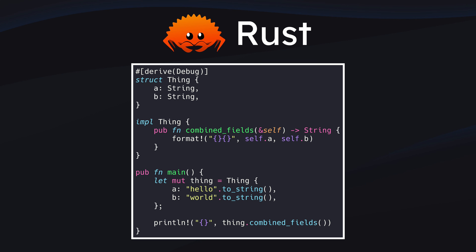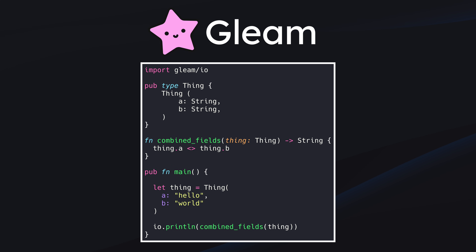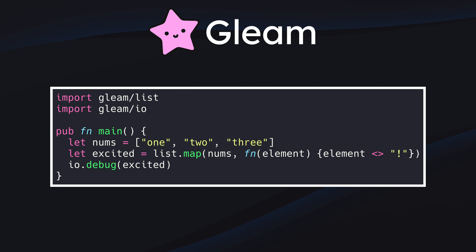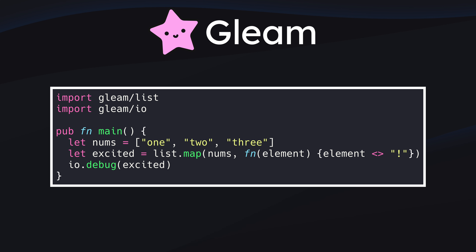Onto methods: Gleam doesn't have support for methods either. What that means is that you can't associate a function with a record such that it has direct access to the record's fields. The idea here is that methods don't have a whole lot of utility when record fields have to be immutable. But one thing I find off-putting is that for collection combinator functions like list.map, you need to call list.map instead of just appending .map to the name of the list. I just wish you could prefix the function name with the first argument so it reads more like subject-verb instead of verb-then-subject. Maybe that's pedantic of me.